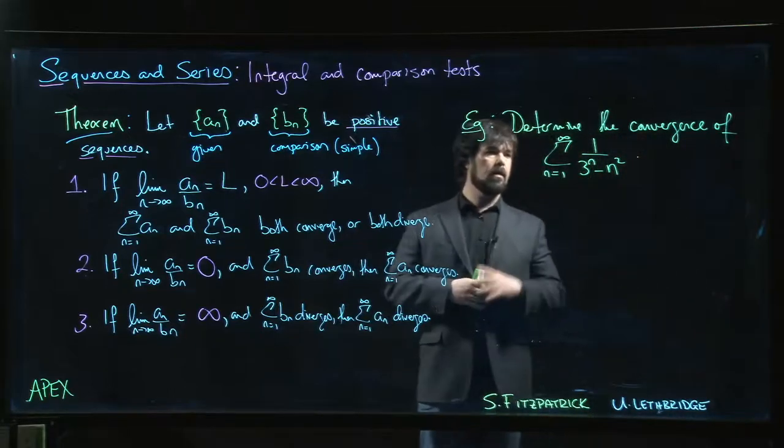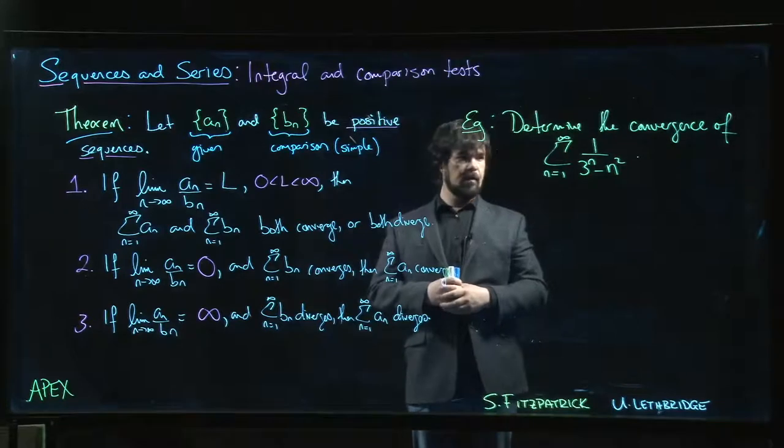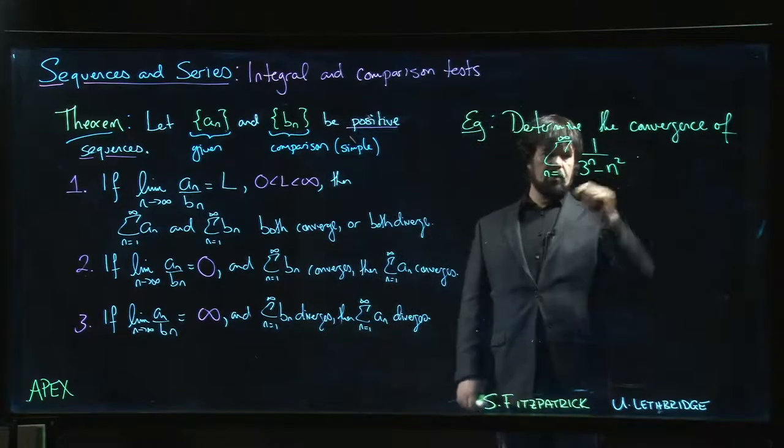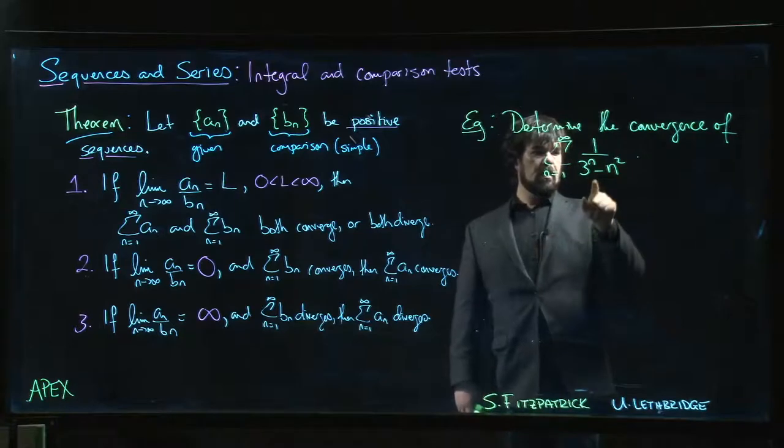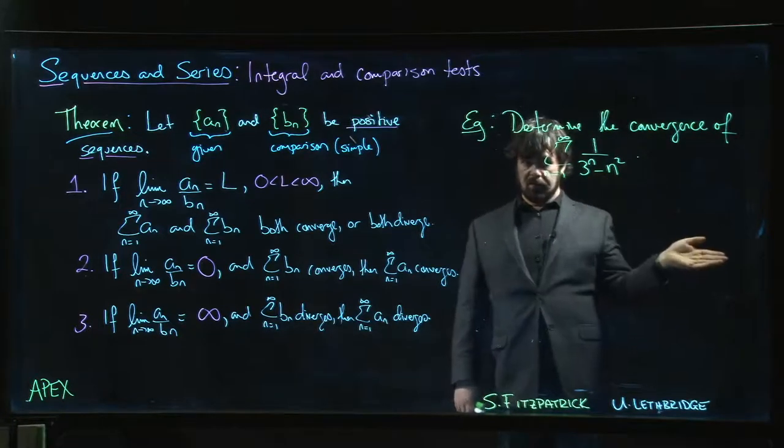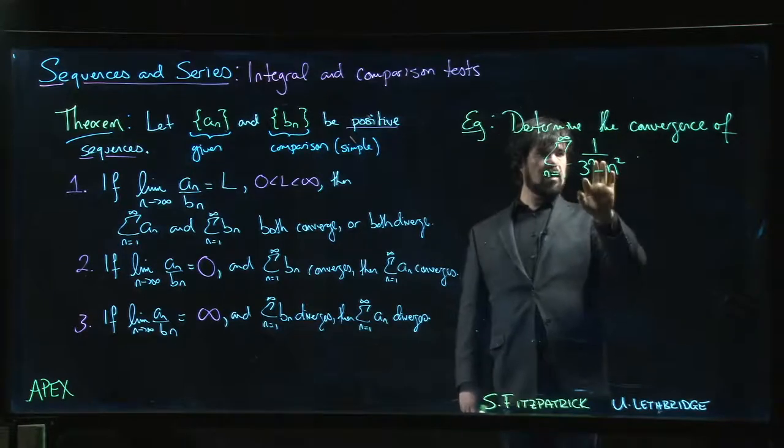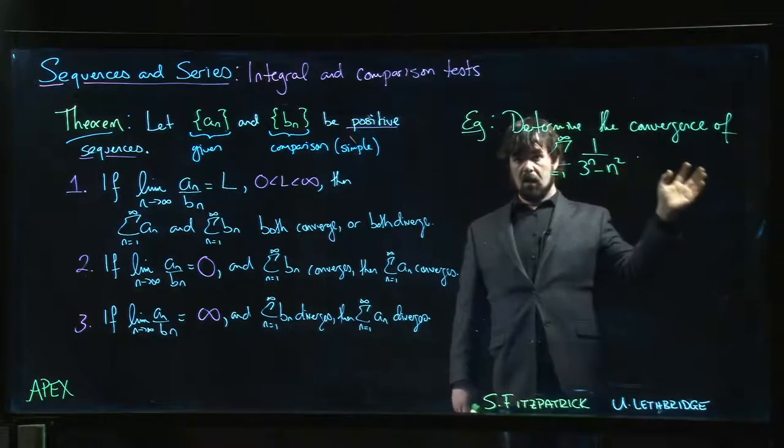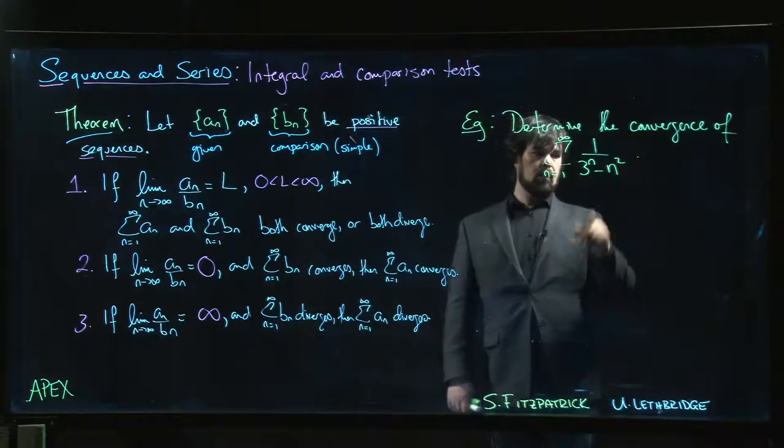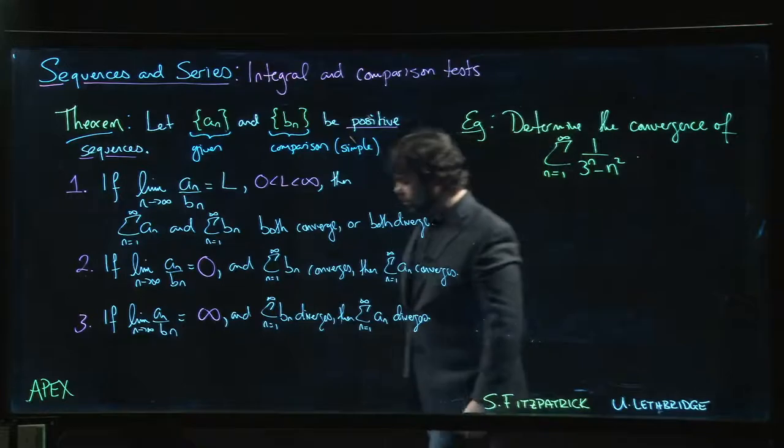Alright, here's our next example. We're going to determine the convergence of this series, which has one geometric term and a p-series term, minus instead of plus. We already dealt with the plus sign example - that was our very first example. We said we can compare with either the geometric or the p-series, simple inequality, direct comparison done. The minus sign makes it a lot harder to set up direct comparisons.